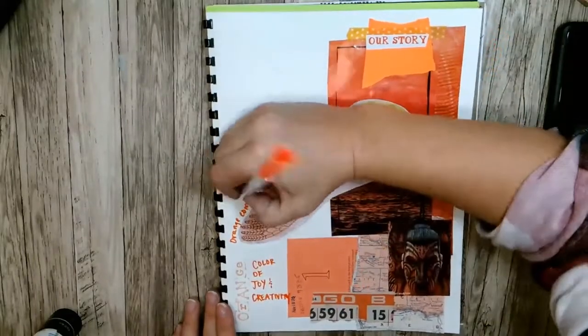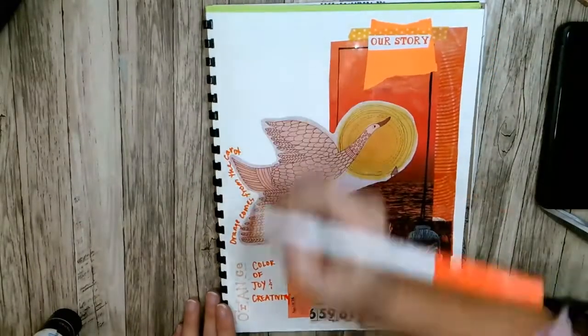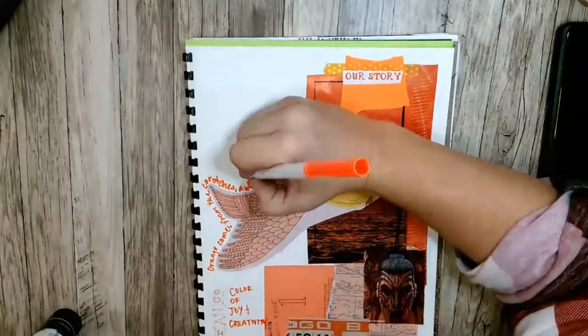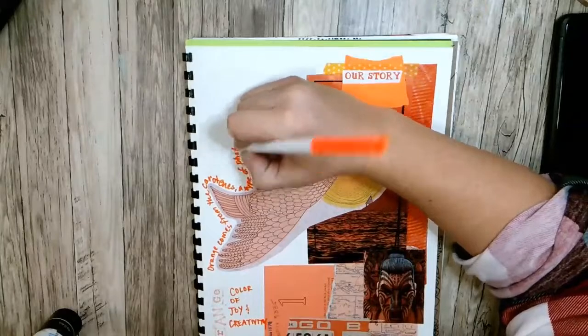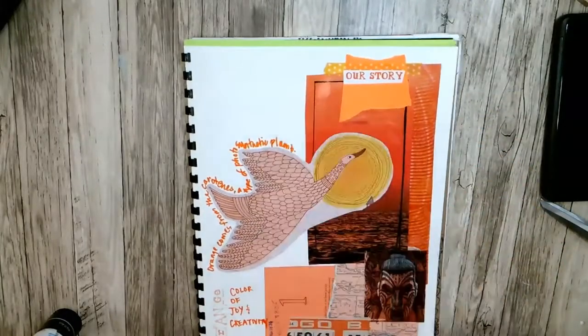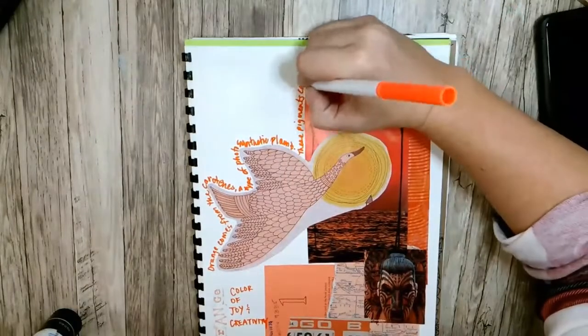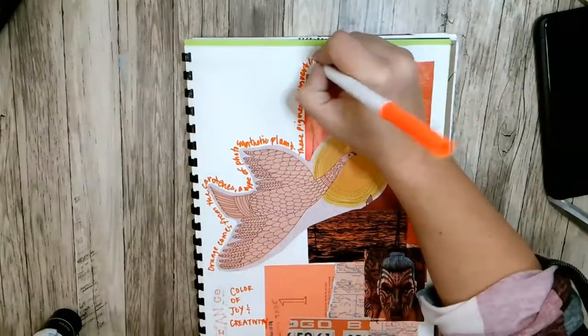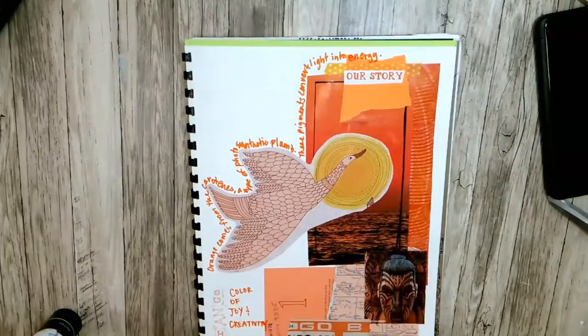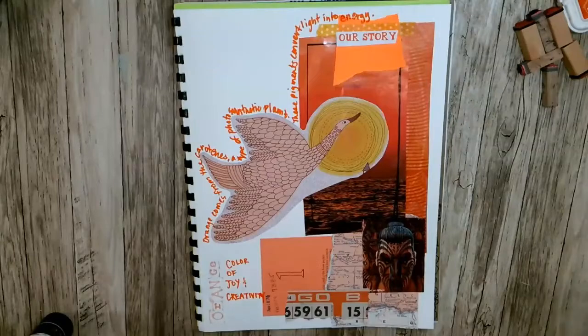So for me, orange is the color of joy and creativity. I looked it up, I just googled it. It also comes from the carotene, like beta carotene, in a plant which is really interesting. It's a type of photosynthetic plant, right, like think carrots. And the pigment comes from light that the plant turns into energy. That's pretty cool. I didn't know that before I did this little investigation here.